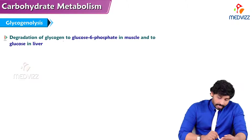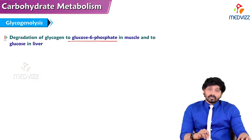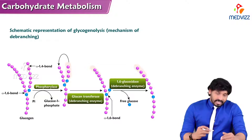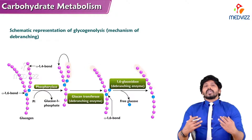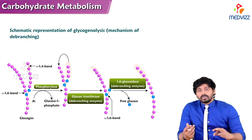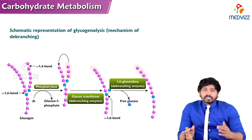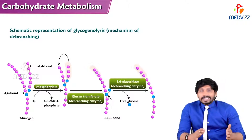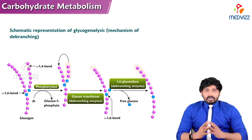Glycogenolysis is the degradation of glycogen to glucose 6-phosphate in muscle, as well as in liver to form free glucose. The glycogen structure, as we have already discussed, is a compact structure. With the help of glycogenin protein, the sequential addition of glucose makes alpha 1,4 glycosidic linkages with the help of glycogen synthase, and with the help of branching enzyme which introduces 1,6 glycosidic linkage, making a complex compact molecular structure.